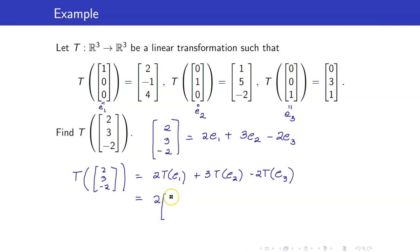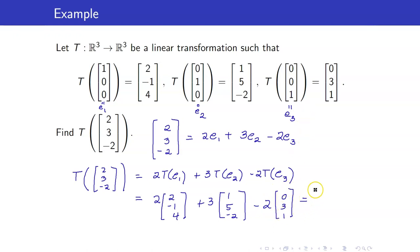This is 2 times T of E1 which is (2, -1, 4), plus 3 times T of E2 which is (1, 5, -2), minus 2 times T of E3 which is (0, 3, 1). So this equals (4 + 3, -2 + 15, 8) — working through: 4 plus 3 is 7, negative 2 plus 15 is 13, minus 6 gives 7 also. Next, 8 minus 6 is 2, minus 2, 0. So therefore T of (2, 3, -2) is equal to (7, 7, 0).